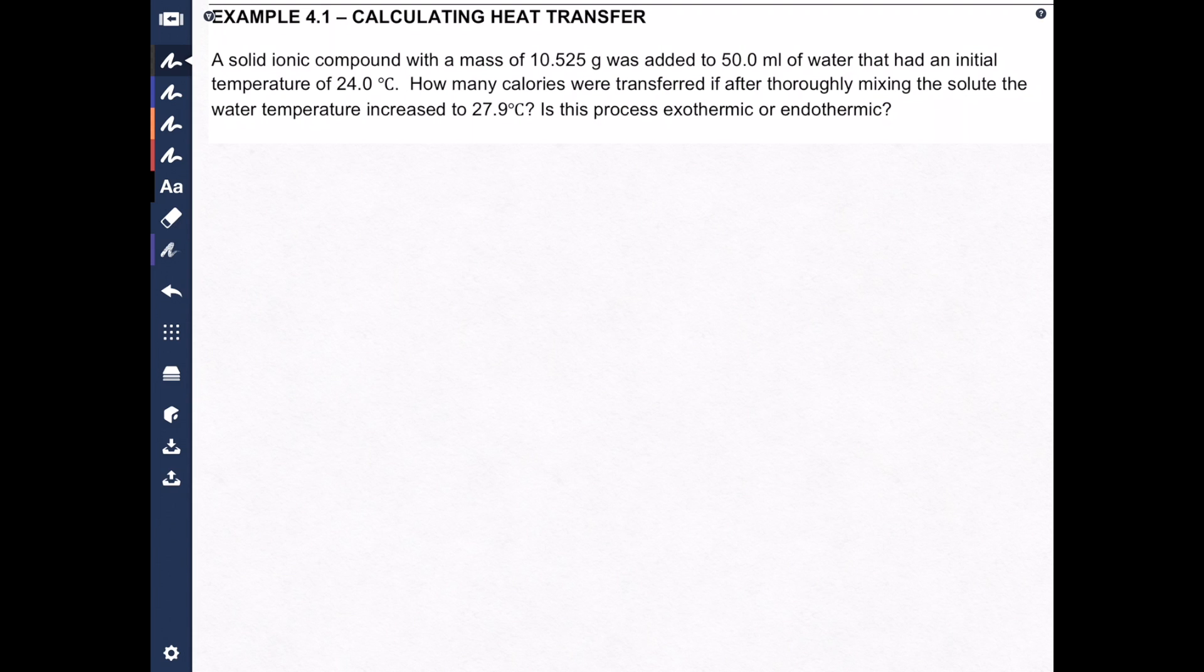Today's example is example problem 4.1, calculating heat transfer. An ionic compound with a mass of 10.525 grams was added to 50.0 milliliters of water that had an initial temperature of 24.0 degrees Celsius. How many calories were transferred if after thoroughly mixing the solute the water temperature increased to 27.9 degrees Celsius? Is this process exo or endothermic?